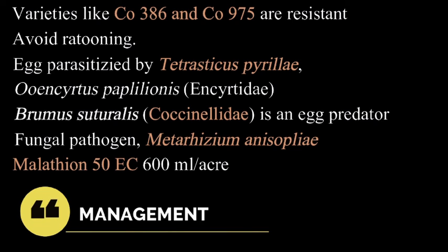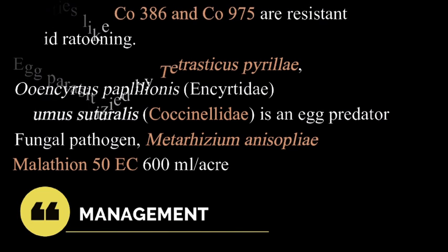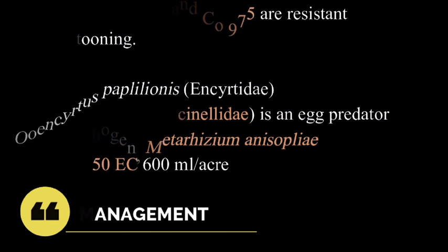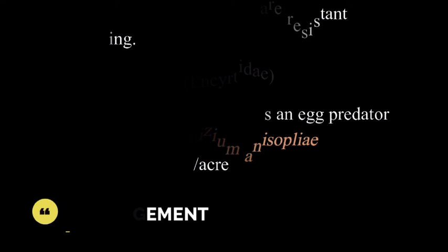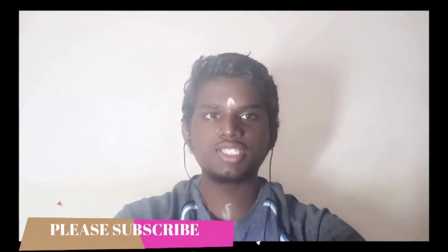Management: varieties like Co-386 and Co-975 are resistant to the attack. Eggs are parasitized by Tetrastichus pyrillae and Ooencyrtus papilionis. Brumoides suturalis, which belongs to the family Coccinellidae, is an egg predator. The fungal pathogen is Metarhizium anisopliae. Spray of malathion 50 EC at 600 ml per acre will control the pest. That's all about the damage symptoms, biology, and management practices of major sucking pests of sugarcane.